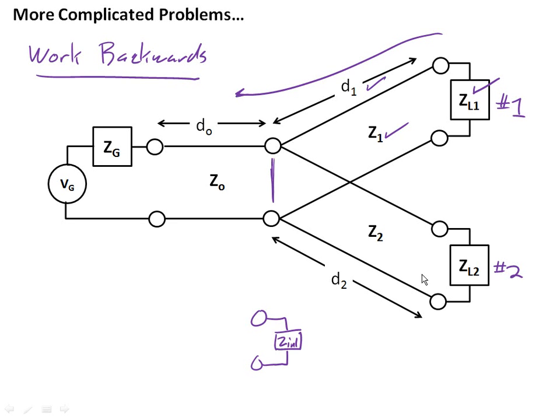We can also do that with Z_in2. We know the load impedance, we know the line impedance, we know the length. We work our way backwards and we find the input impedance Z_in2 at this same point right here.